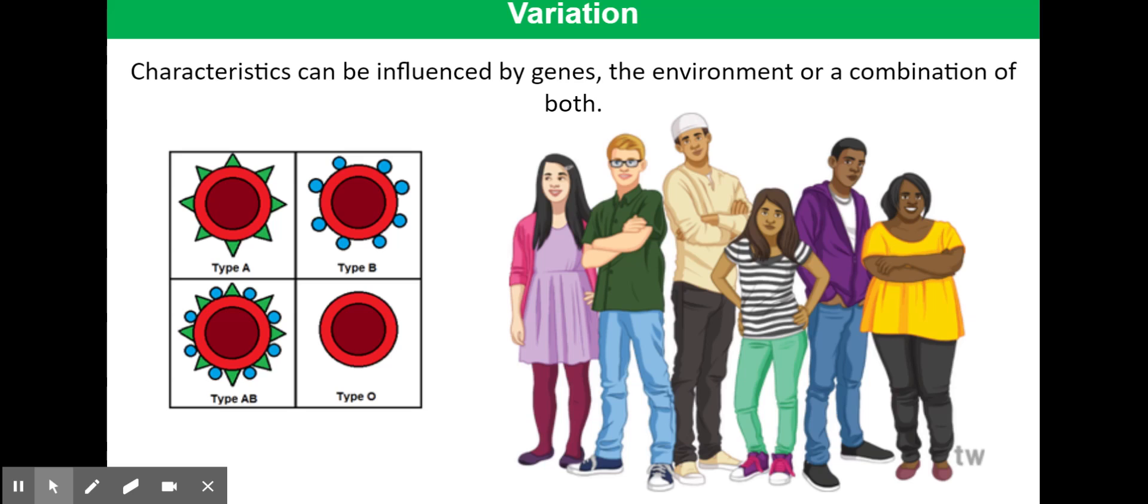However, there are some characteristics that are influenced by both the genes and the environment. For example, your height and your weight and also your skin color. So while some people might have fairer colored skin, if they then go and sunbathe or if they go and have a fake tan, their skin color will change. So when you look at someone's skin color, it's based on the genes, what you have genetically determined, but also based on the environment you've been in.